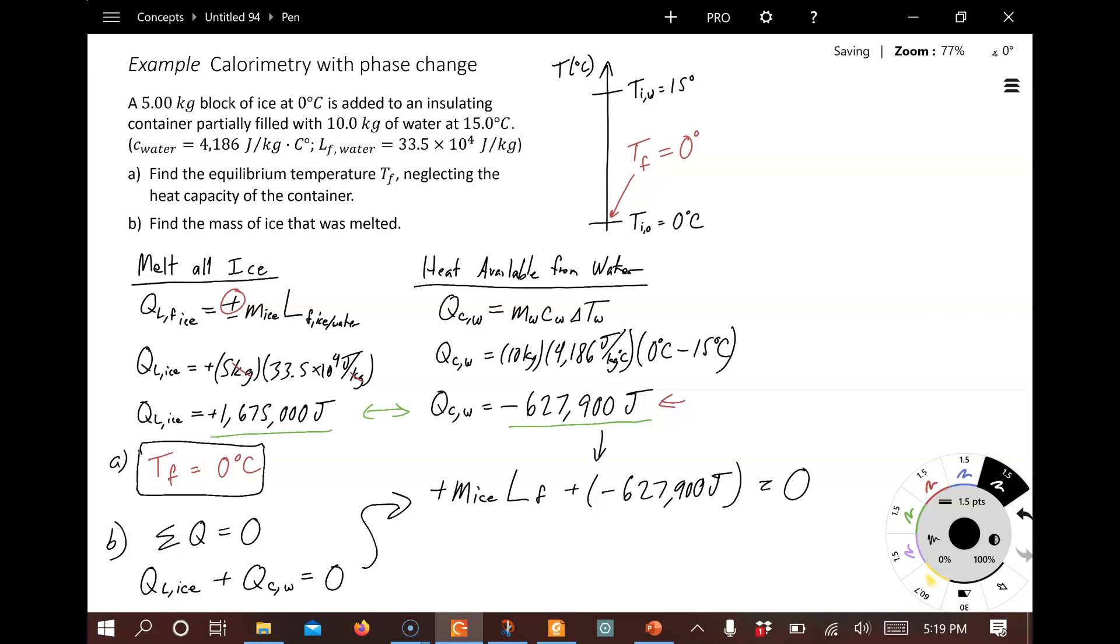Add them up and you get zero. Now we want to solve for the mass of the ice. We need to move this term 627 to the other side of the equation. Then we need to divide by L sub F. L sub F, which we remember is equal to 33.5 times 10 to the fourth joules per kilogram. Now the joules will cancel, and 1 divided by kilograms is going to be equal to kilograms. So when we put this into the calculator, we get a value. 1.87 kilograms of ice. That's the amount of ice that you can melt from the water cooling from 15 to 0 degrees.